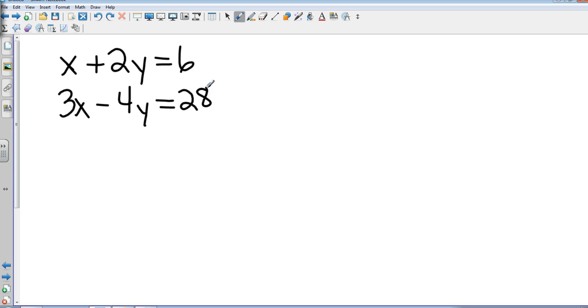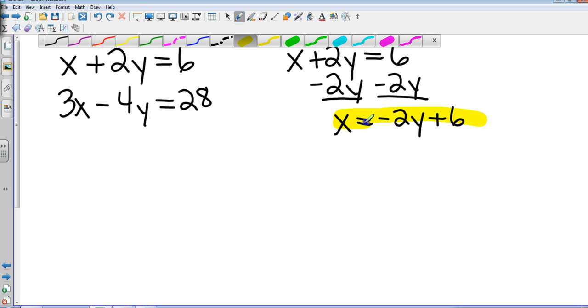So in this case, I don't have one that's right away set up for me. I can take that top one though pretty easily. Basically I can get x by itself by subtracting the 2y. So that's x equals negative 2y plus 6. So now I know what x is.